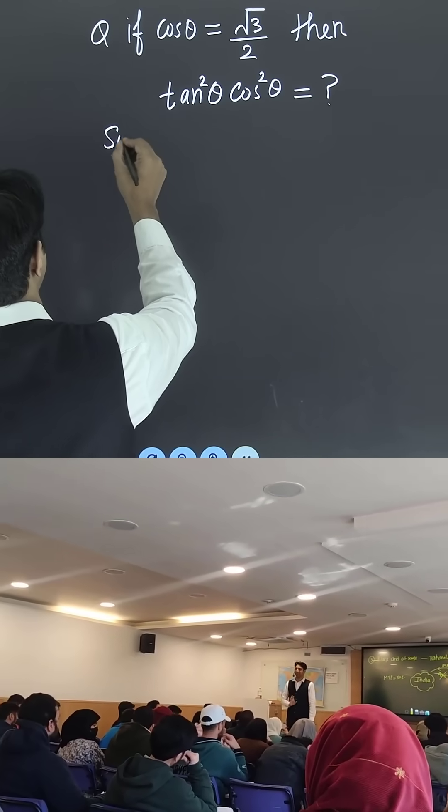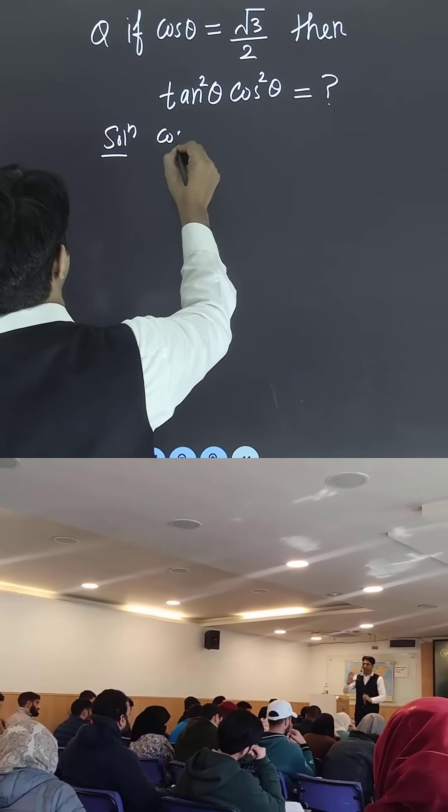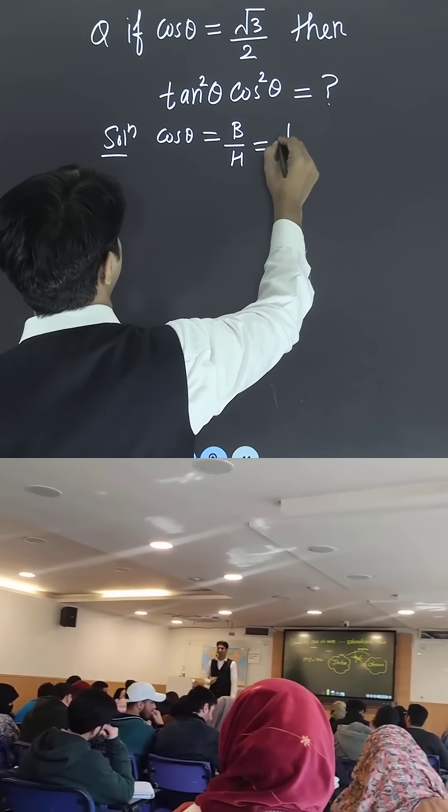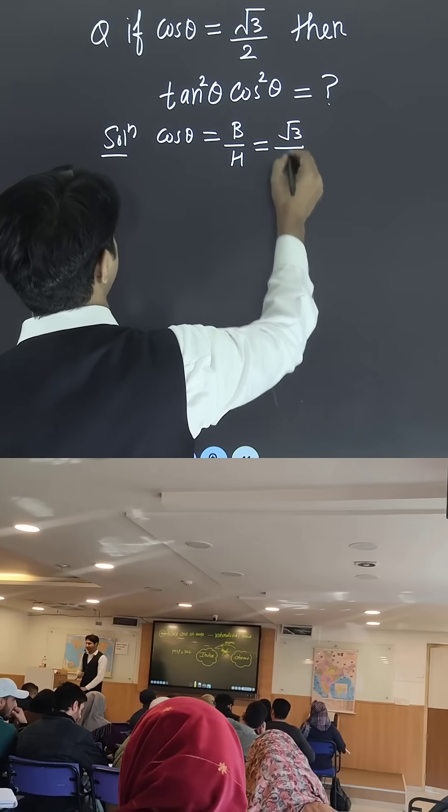Now, we know very well, cos θ can be written as B/H. So, what is the value of B? This is √3. What is the value of hypotenuse? It is 2.